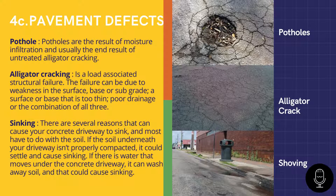Another defect is shoving. Shoving is the formation of ripples across a pavement, and this characteristic shape is why this type of distress is sometimes called washboarding. Shoving occurs at locations having severe horizontal stresses, such as intersections. It is typically caused by excess asphalt, too much fine aggregate, rounded aggregate, too soft an asphalt mix, or a weak granular base.